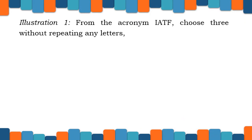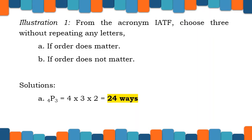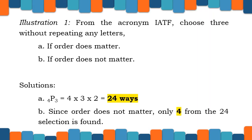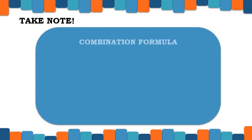Let us do Illustration 1. From the acronym IATF, choose 3 without repeating any letters. For part A, if order does not matter, our solution gives 4P3 = 4 times 3 times 2 = 24 ways. For letter B, since order does not matter, only 4 from the 24 selections is found. Take note, we need to consider our combination formula.